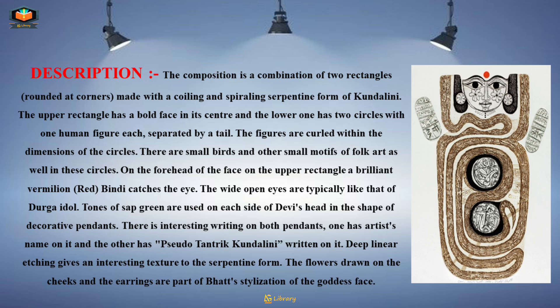The figures are curled within the dimensions of the circles. There are small birds and other small motifs of folk art as well in these circles. On the forehead of the face on the upper rectangle, a brilliant vermilion red bindi catches the eye. Oopri ayat par, chehre ke mathe par, ek chamakdar sindur laal bindi nazar ati hai.